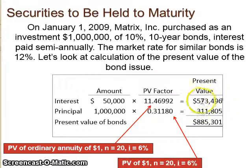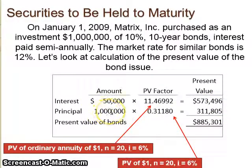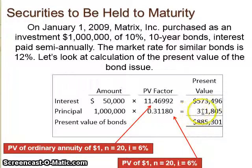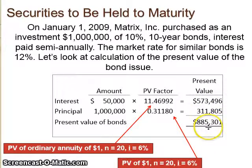The present value of those interest payments is $573,496. The principal amount is $1,000,000, because that's what you're going to get at the end of 10 years. So you're going to use the present value of 1 to find what that million dollars paid out in 10 years is worth today — using N = 20 and I = 6%, the same effective interest rate discounting. Looking at the two together, the interest and principal are worth today $885,301.